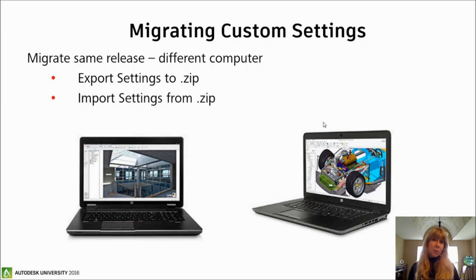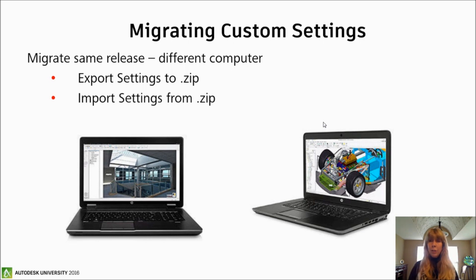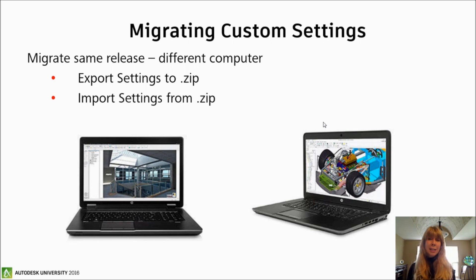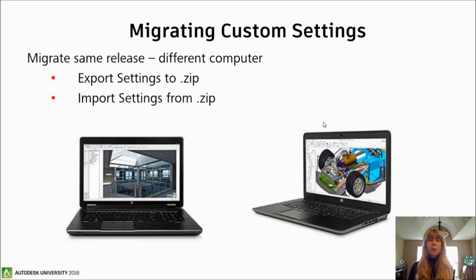There are a few different scenarios that you might have, and I want to make sure I cover them all. Let's start off with migrating your custom settings, same release, from one computer to another. So let's say I installed AutoCAD 2017 on a computer, but now I got a shiny new computer. I want to take my custom settings from my older computer to my new computer, same release of AutoCAD. On the old computer, you're going to export your custom settings to a zip file, and then copy that file over to the new computer.